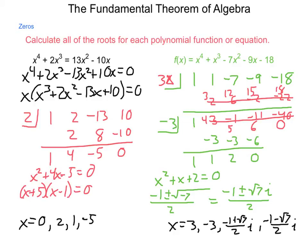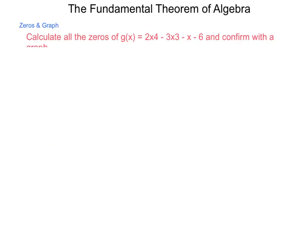So, we have found our roots and we knew how many we were looking for based on the fundamental theorem of algebra. And you can also see here we have conjugates based on our conjugate root theorem. Because we got one, we knew we had to have the other one in there somewhere. Let's take a look at another example. Here, we are going to calculate all the zeros of g(x) and confirm it with a graph. So, as we go through, we have a quartic again. So, we should be looking for four roots.